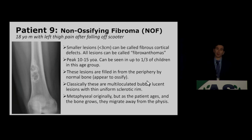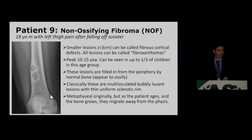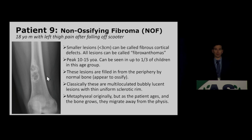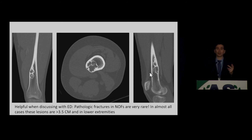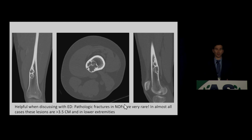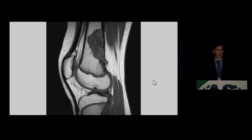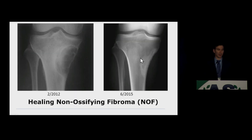Patient 9 shows the typical appearance of a non-ossifying fibroma (NOF): a cortically-based, eccentric, lobulated, lytic, bubbly lesion with very sharp margination and narrow zone of transition. These can be seen in up to one-third of children. They're often metaphyseal in origin but appear to migrate into the diaphysis as the bone grows. Pathologic fractures of NOF are exceedingly rare and almost all reported cases occur in very large lesions in the lower extremity. On follow-up, these ossify from the outside in.